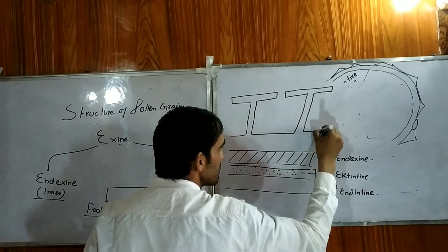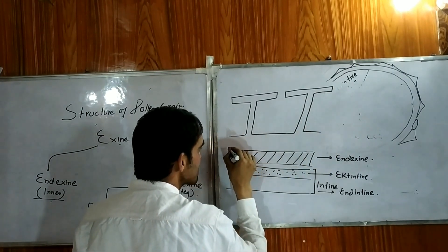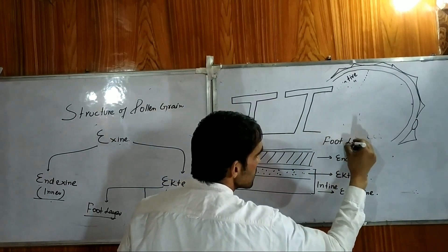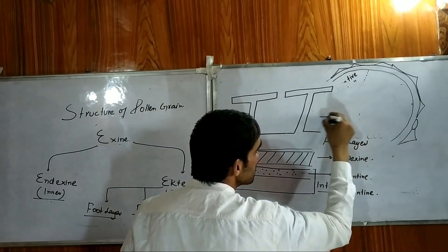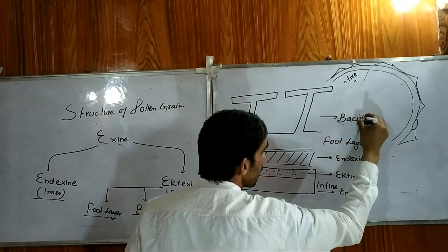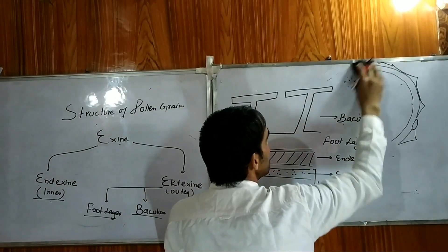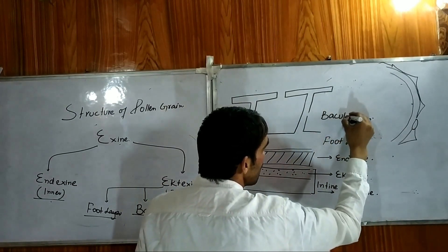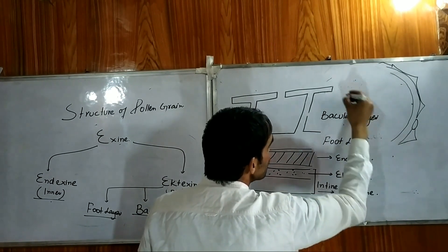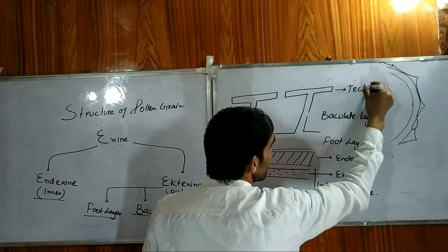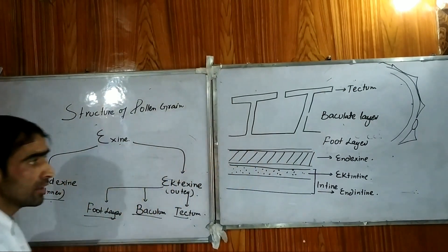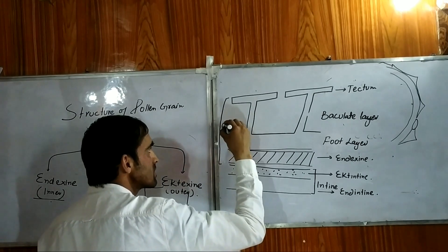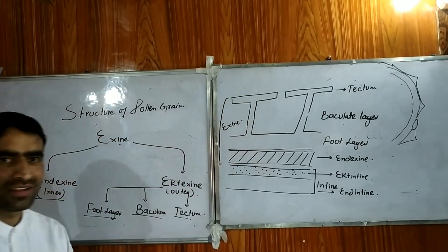See the complexity of this structure. The foot layer is the base layer of ectexine. The baculum layer consists of pillar-like structures called columella — this is called the baculate layer. The tectum is the outer cover — a roof-like structure. So remember: from endexine all the way to ectexine, this entire structure constitutes the exine.